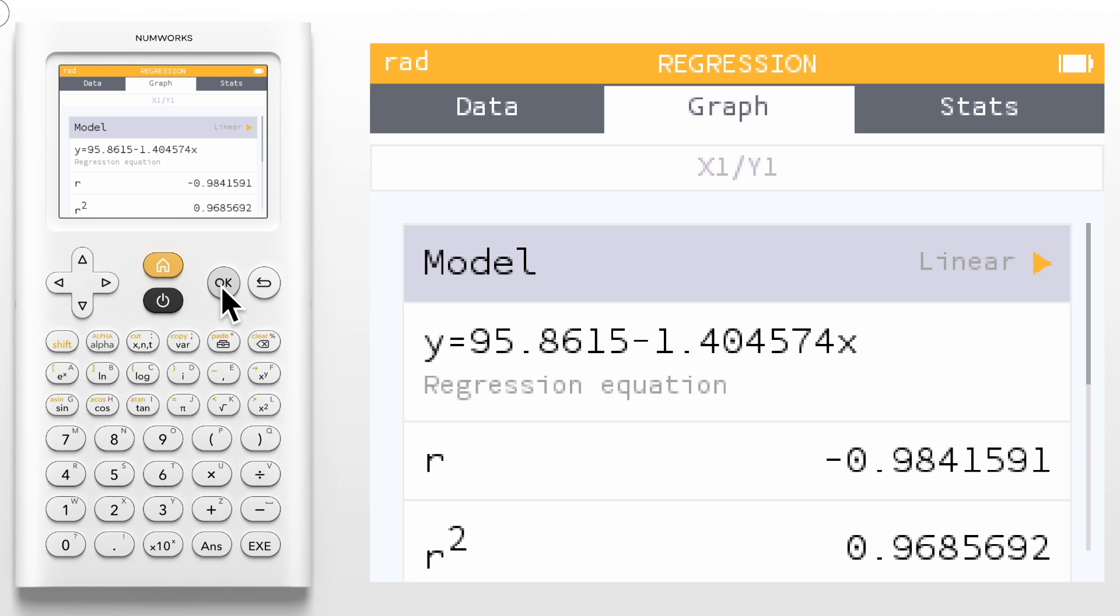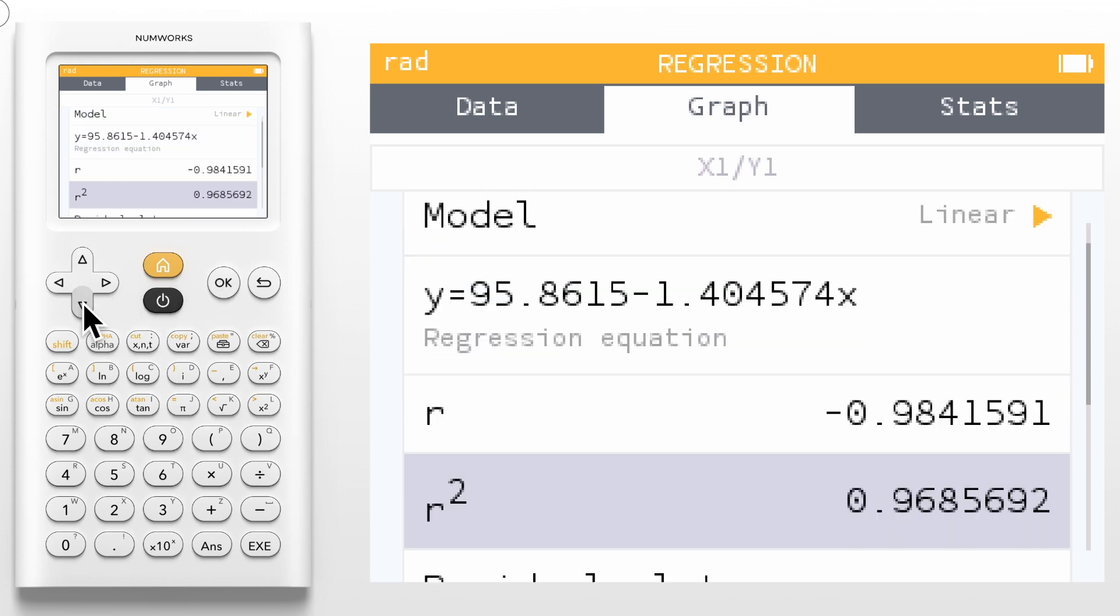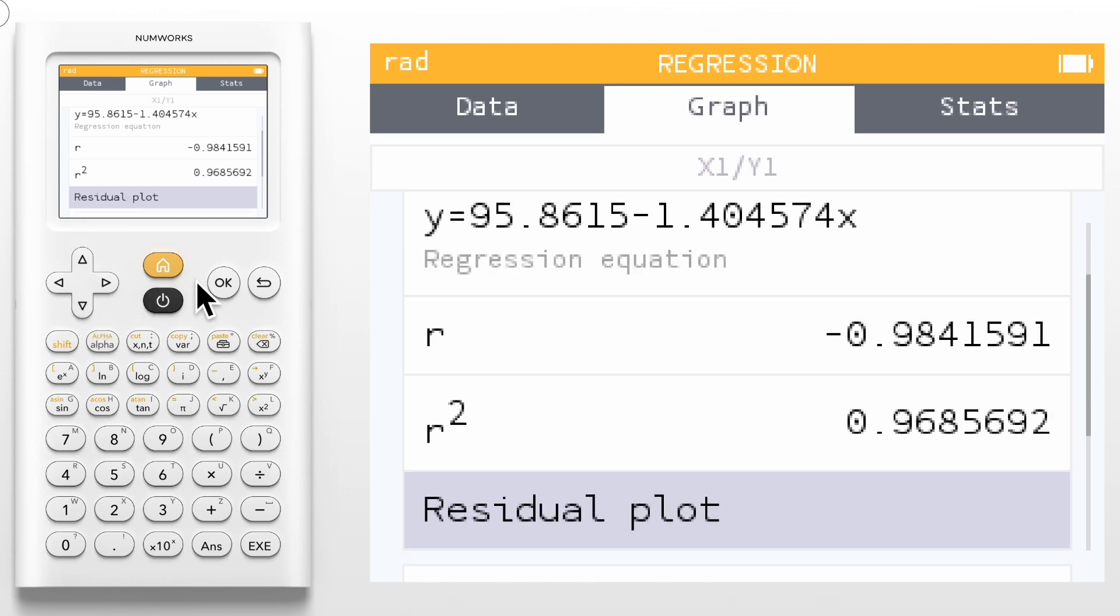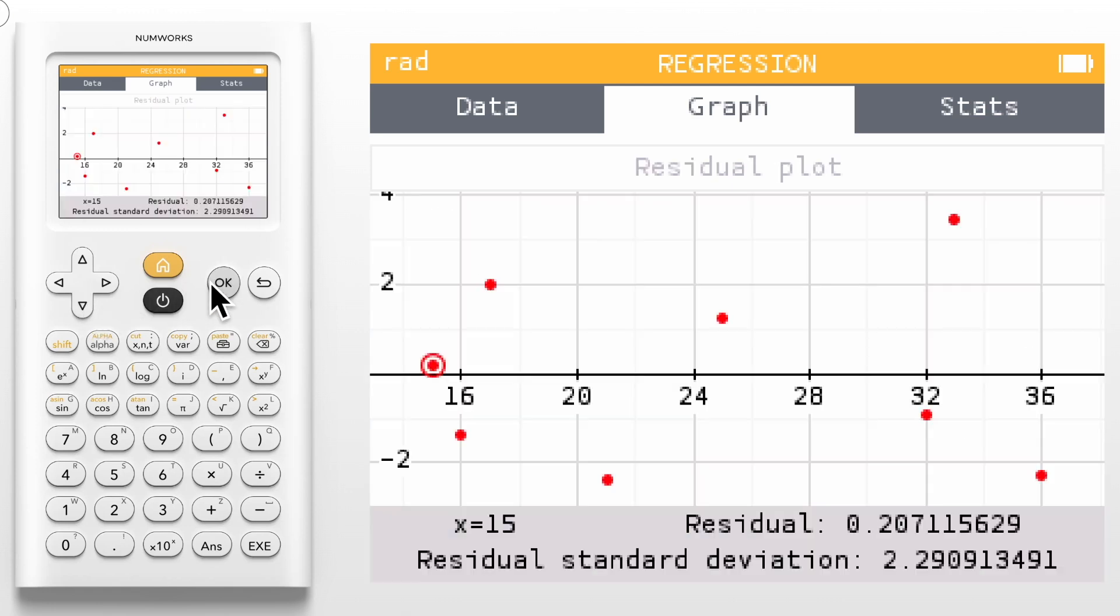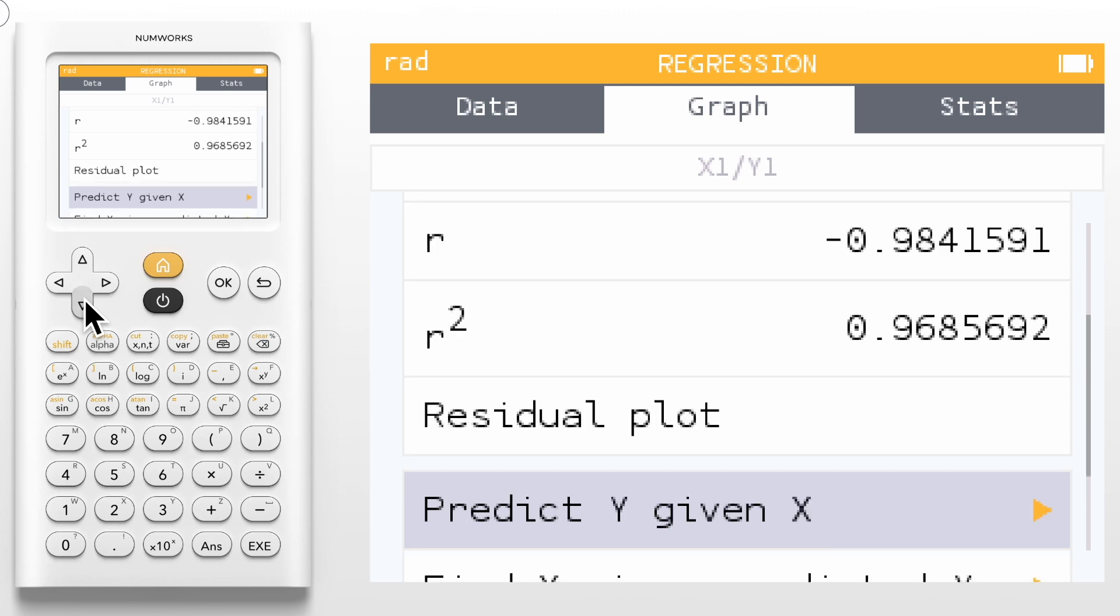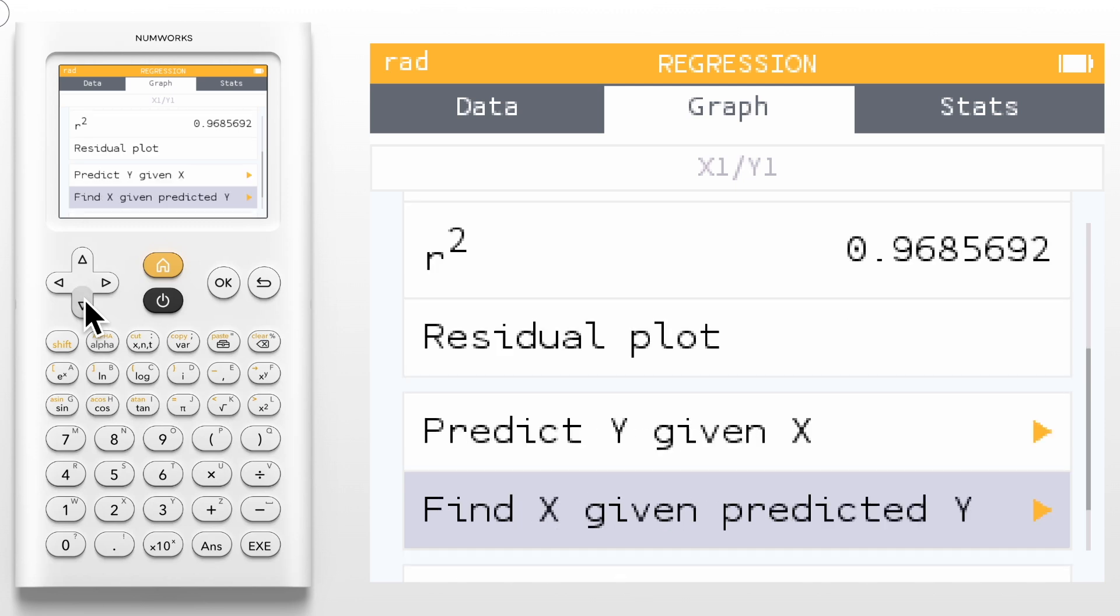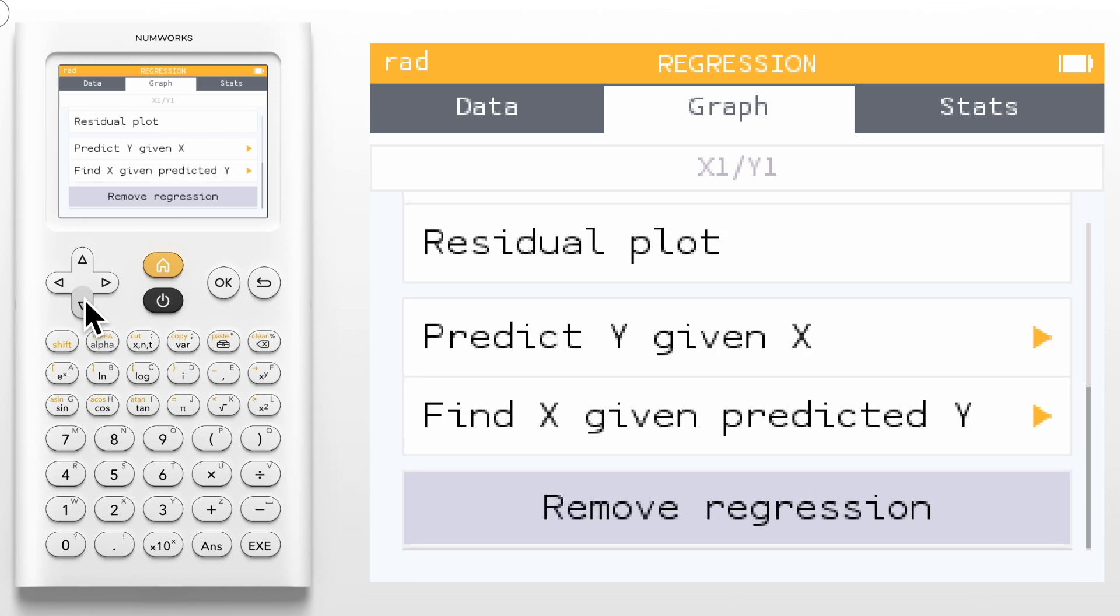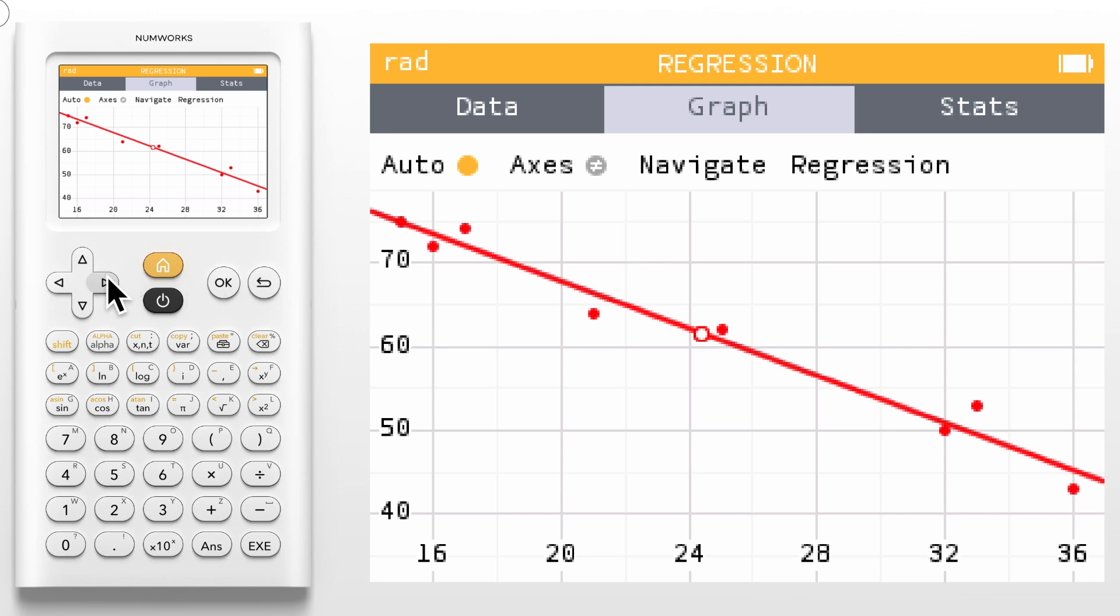Here you can change your regression model type, see your regression equation, coefficient of determination R squared, and the correlation coefficient. We can also create a residual plot to assess the fit of the line. Simply press OK on residual plot. Use the back button to return to the regression menu. The final options allow you to use the model to make predictions or solve for X given a predicted value. You can also remove the model if needed. The stats tab will display the relevant statistics for your data.